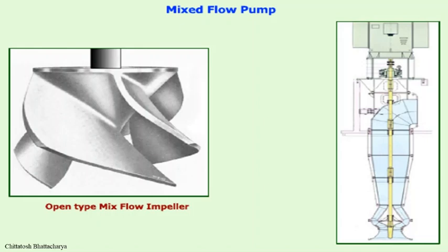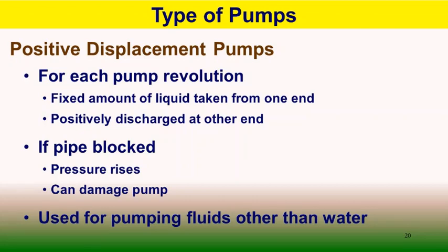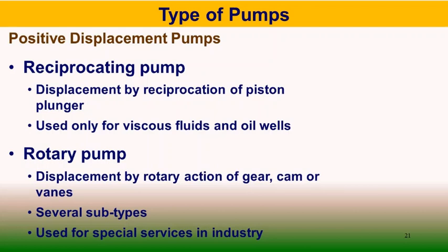Mixed flow arrangements are mostly found in CW pumping and CEP. Positive displacement pumps positively displace a fixed amount of liquid from one end to the other. If these pumps are blocked, pressure may rise and damage the pump. They may be reciprocating type — with piston-cylinder or plunger-crankshaft arrangement — or rotary type with vane, gear, or cam, both used for high-density viscous fluid transfer.